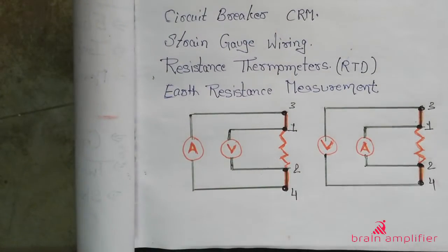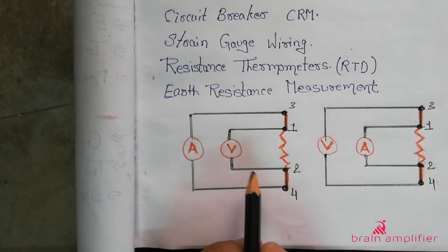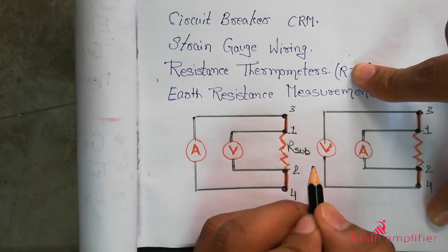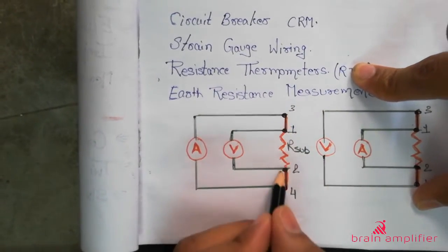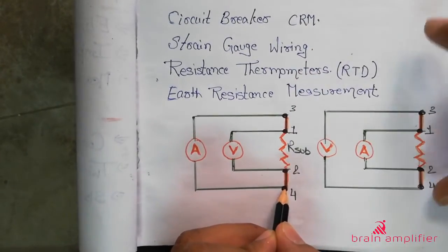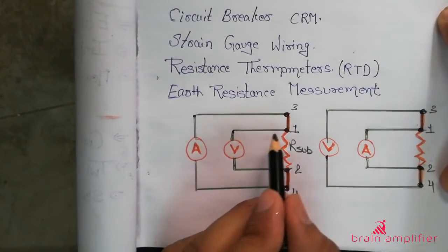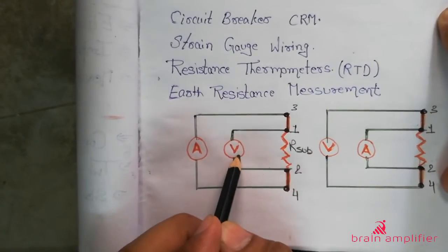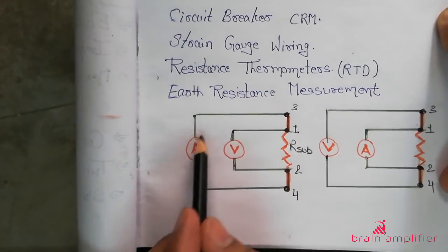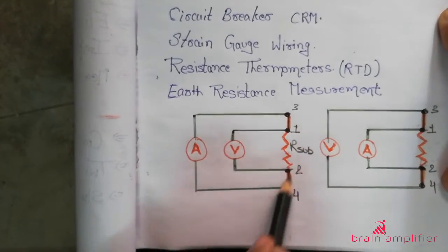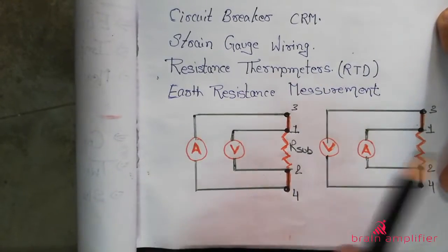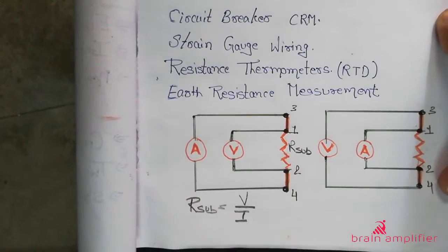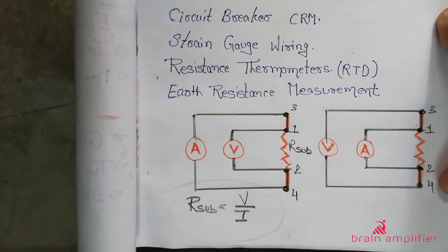Now there may be two types of connections — follow carefully. Suppose the resistance to be measured, R_subject, is between points one and two. Points three and four are the connecting lugs or extra parts of that resistance. If I put my voltmeter at points one and two, and the ammeter at points three and four — that is, voltage is inside the ammeter — then the voltmeter shows the voltage drop across R_subject and the ammeter shows the current through R_subject. So R_subject equals voltmeter indication divided by ammeter indication, and it is accurately measured.